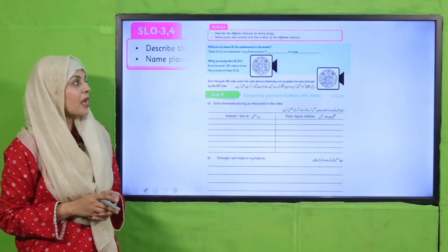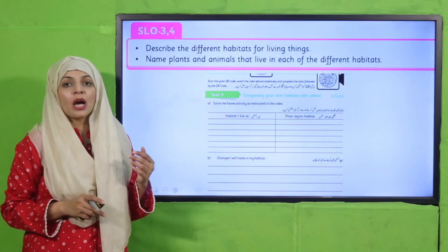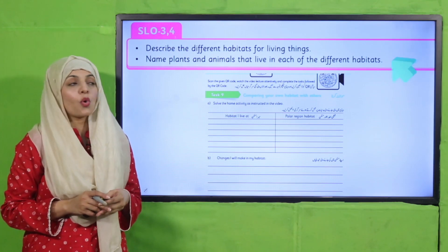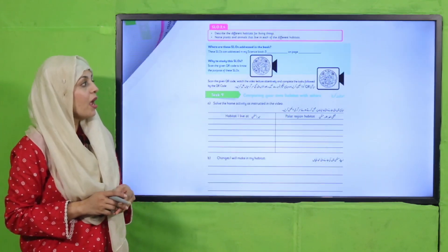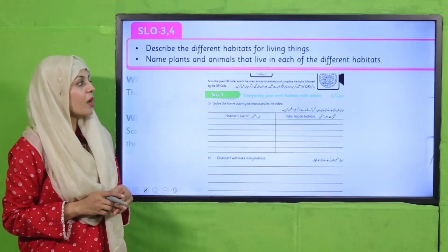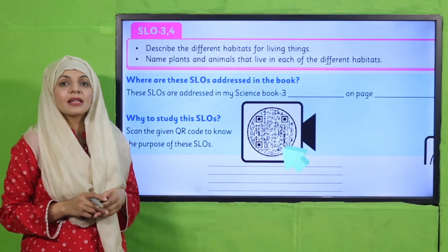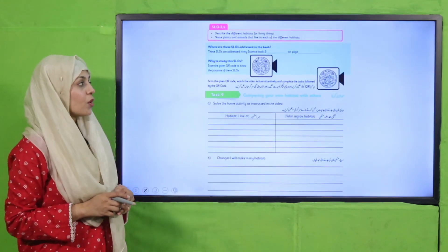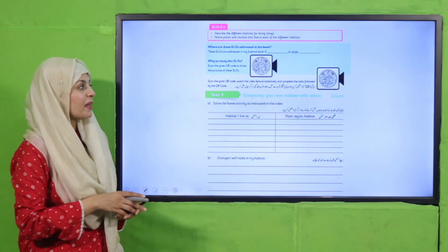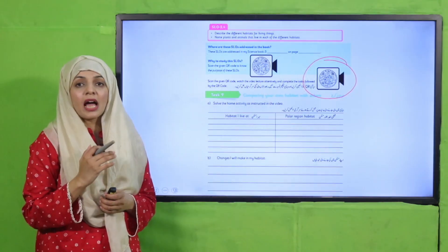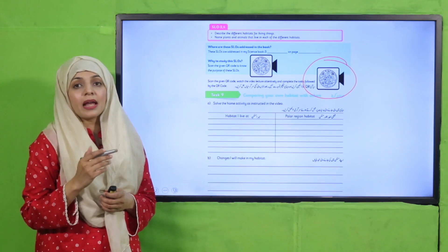My dear students, what you will do next is carefully read the two SLOs and then find them in your Science 2 or GK 2 book and write the page number in the given blank. After this, you will scan the QR code and watch the video attentively attached with it.